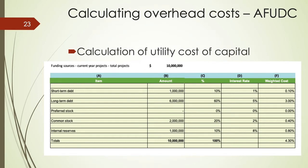Here we have an example of total projects for the coming year of 10 million dollars. We're going to use a combination of resources: 1 million dollars of short-term debt from a local bank loan, 6 million dollars in bonds, 2 million dollars in common stock as an investor-owned utility, and 1 million dollars from our own internal reserves — totaling 10 million dollars of project costs.